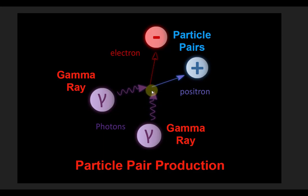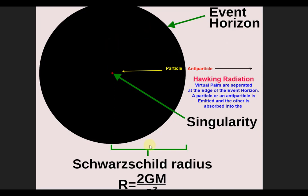When two gamma rays get very close to each other, the energy of the gamma rays brings out a particle and an antiparticle — in this case, a positron and an electron. Another way of bringing real particles into existence is to have a singularity and an event horizon. If a particle and an antiparticle are virtual at the edge of the event horizon, a particle can be stuck inside the event horizon and an antiparticle on the outside. The antiparticle is then emitted by the black hole — so from virtual particles, we can have real particles introduced into the universe. This radiation that comes from black holes is called Hawking radiation.